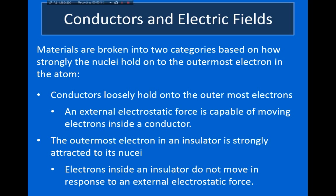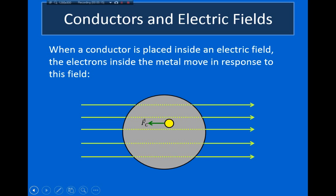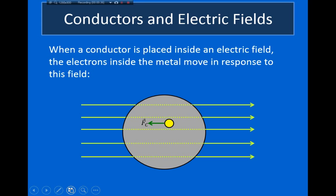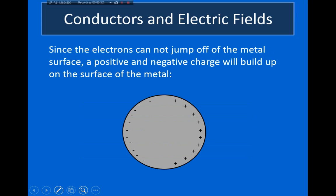So as I just mentioned, when a conductor is placed inside an electric field, the electrons inside the conductor will move in response to this external electric field. For example, if I have this piece of metal and I place it inside an electric field which points to the right, because the electrons inside the metal are negatively charged, they'll experience a force which pushes them in the opposite direction. As they're pushed over to the left side of the metal, the left side of the metal becomes negatively charged.